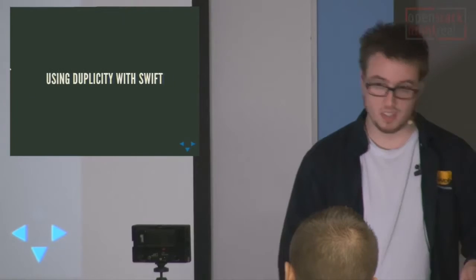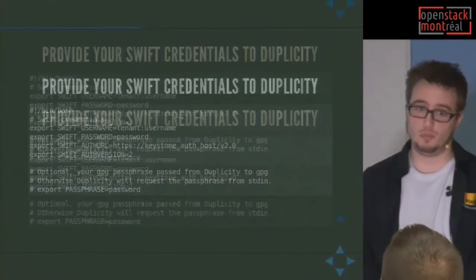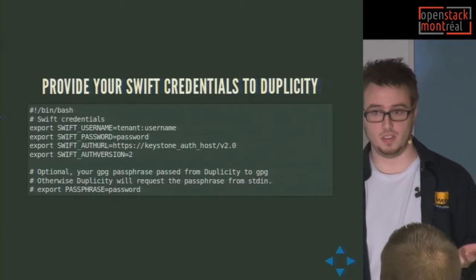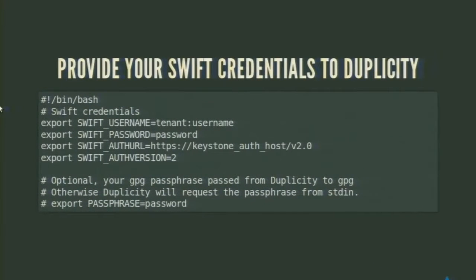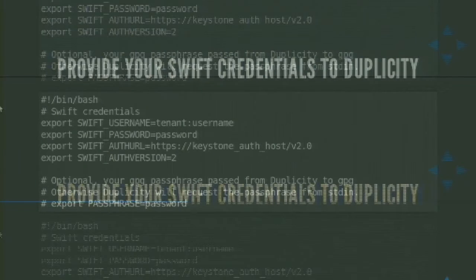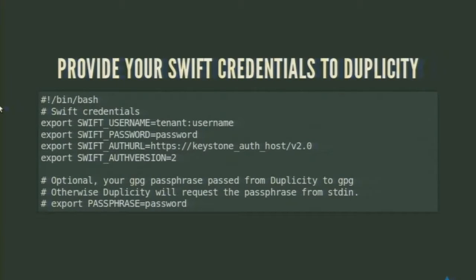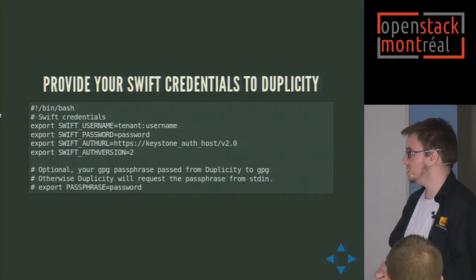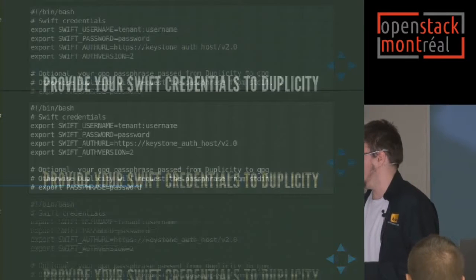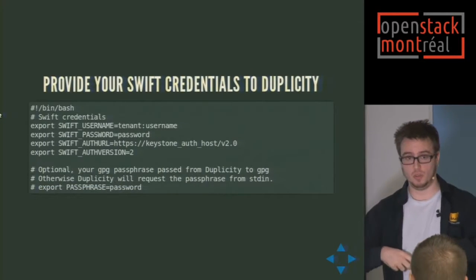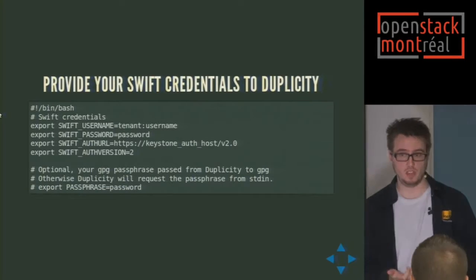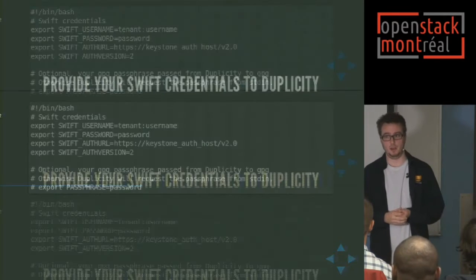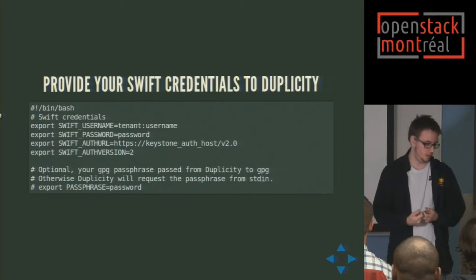Using Duplicity with Swift is really easy. You need to provide Duplicity with credentials to your Swift object storage service. You can do that inline with parameters like --swift-username, or it can read environment variables. I have a script just for exporting credentials — it's not ideal to have usernames and passwords in environment variables, but until I find a better way, that's how I use it. When Duplicity does your backups, it will ask for your GPG passphrase — you can provide it via an environment variable, or it will prompt you before doing the backup.